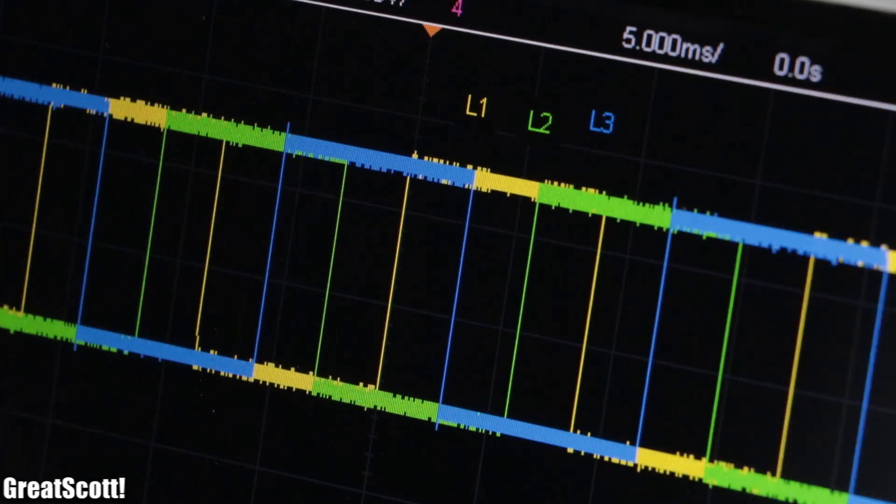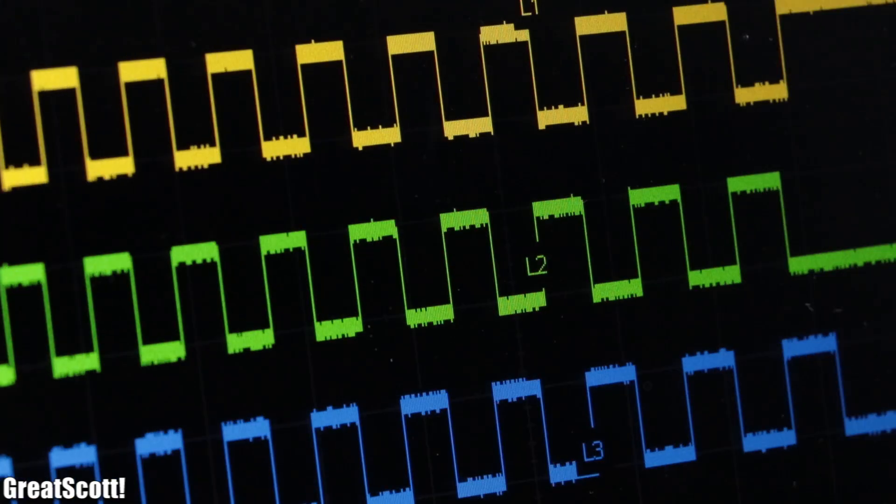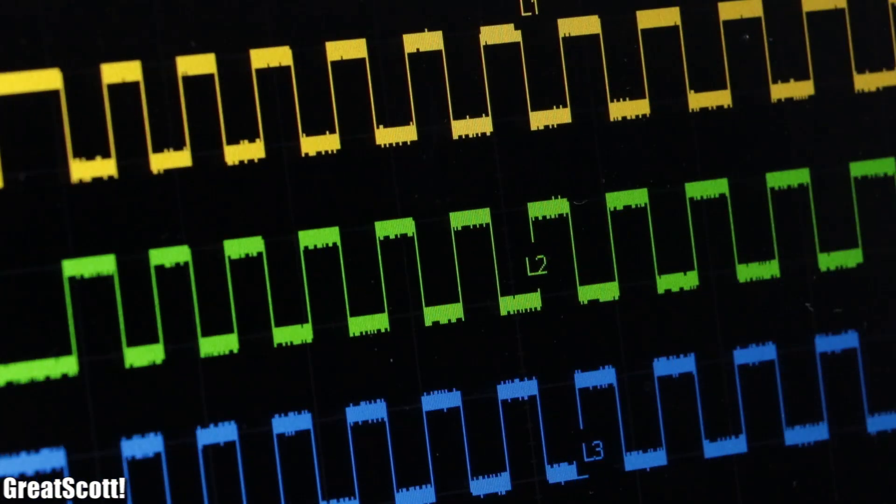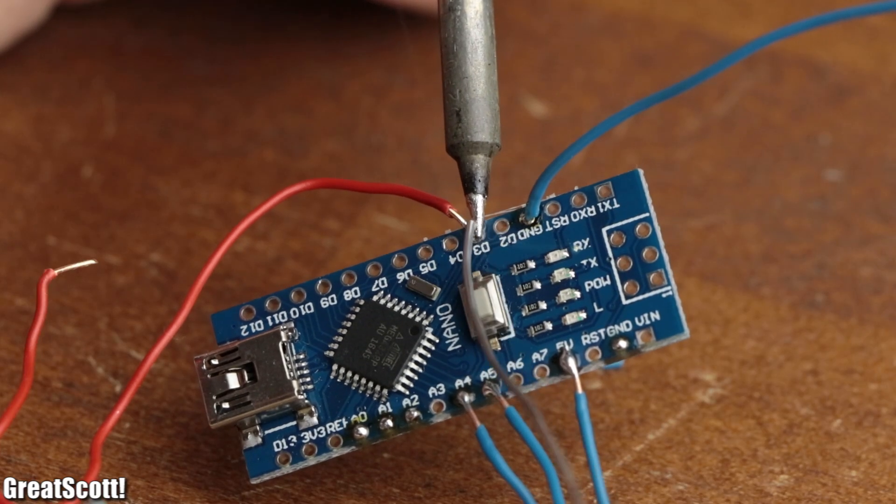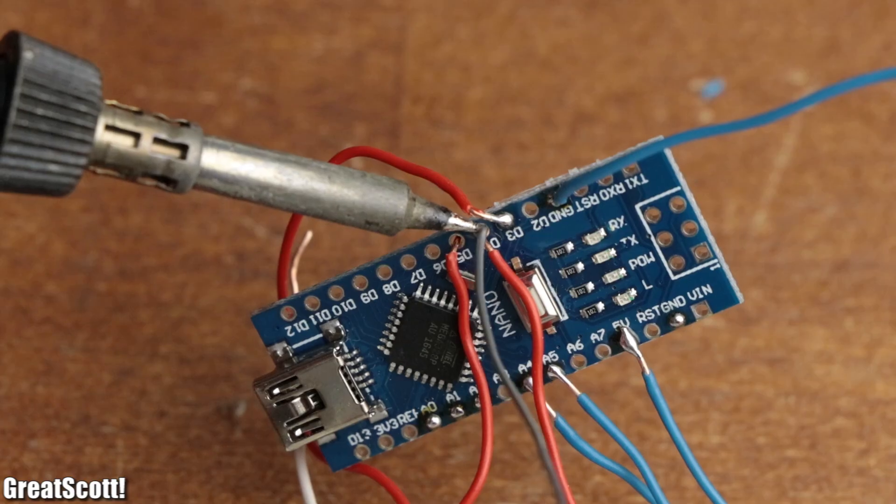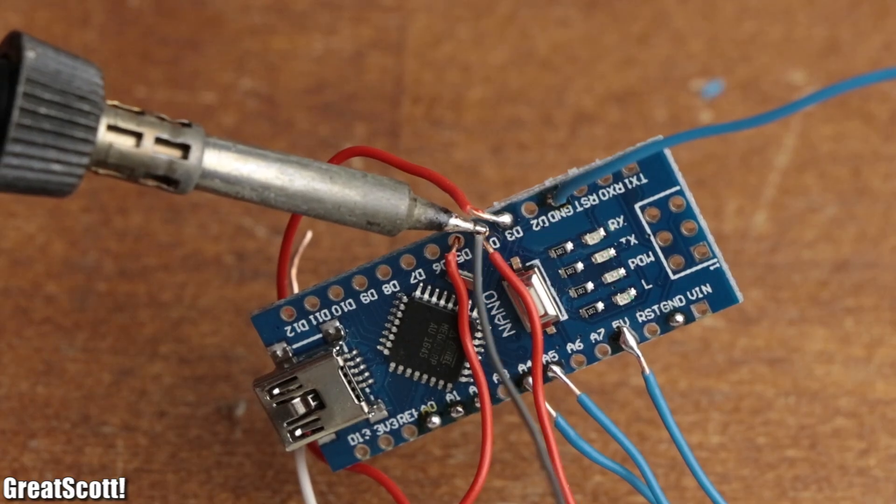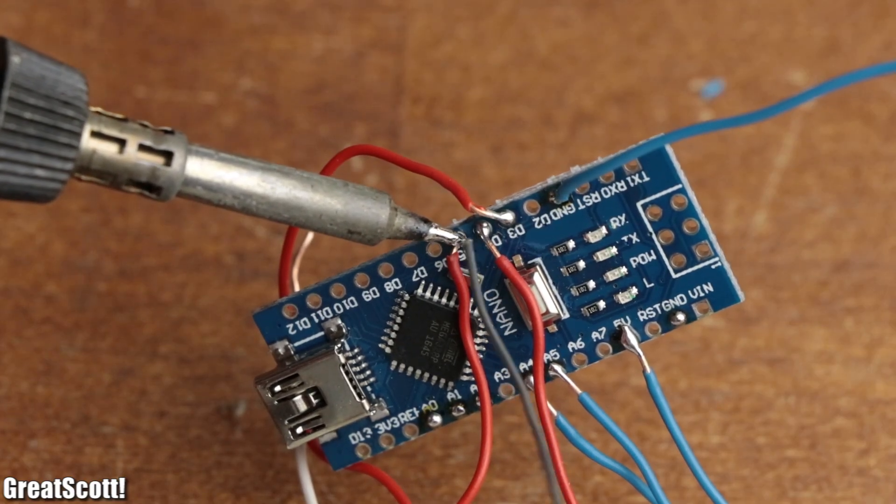This creates a three phase voltage as well, but this time with three square voltages. This way I can connect the comparator output of L1 to an interrupt pin, while I connect the comparator outputs of L2 and L3 to ordinary digital pins.